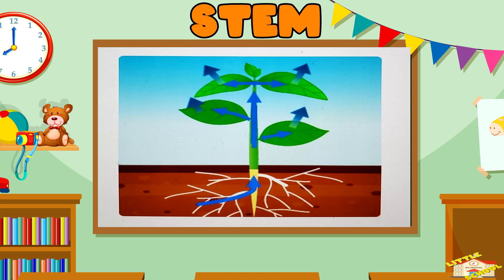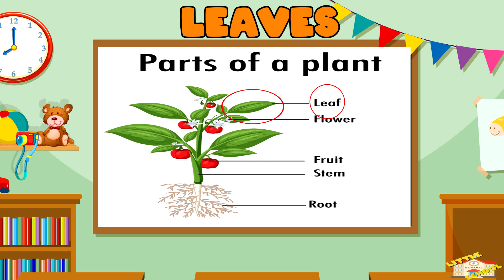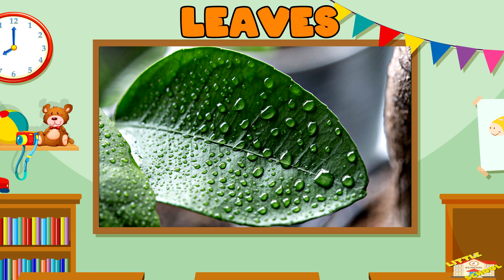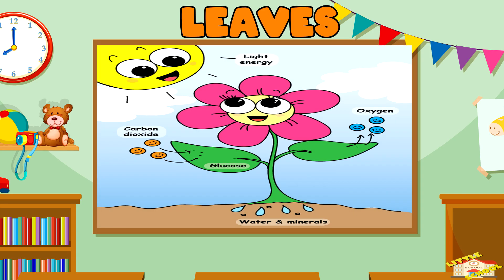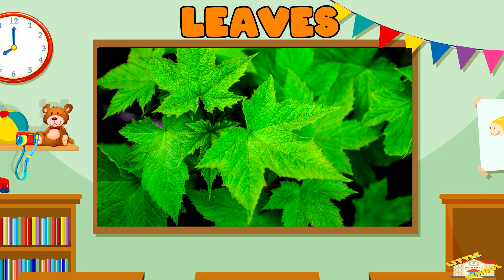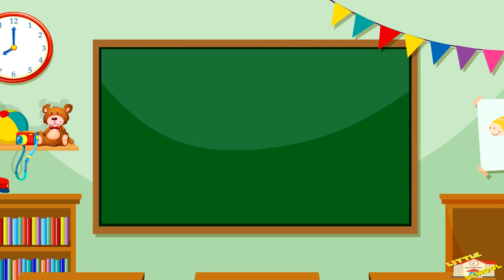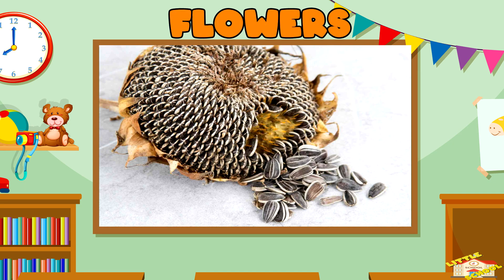Leaves use sunlight, water, and carbon dioxide to make food for the plant in a process called photosynthesis. Leaves come in many different shapes and sizes, but they all help feed the plant.